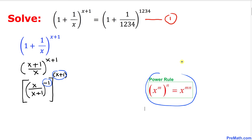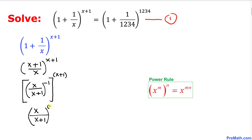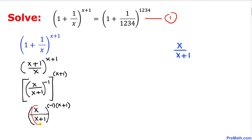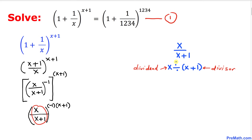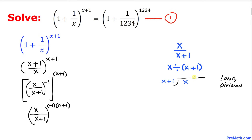We are going to use the power rule. Therefore we can write this one as x divided by x plus one, to the power of negative one times x plus one. Now let's focus on the base x divided by x plus one. This could be expressed in long division notation, where x is the dividend and x plus one is the divisor.